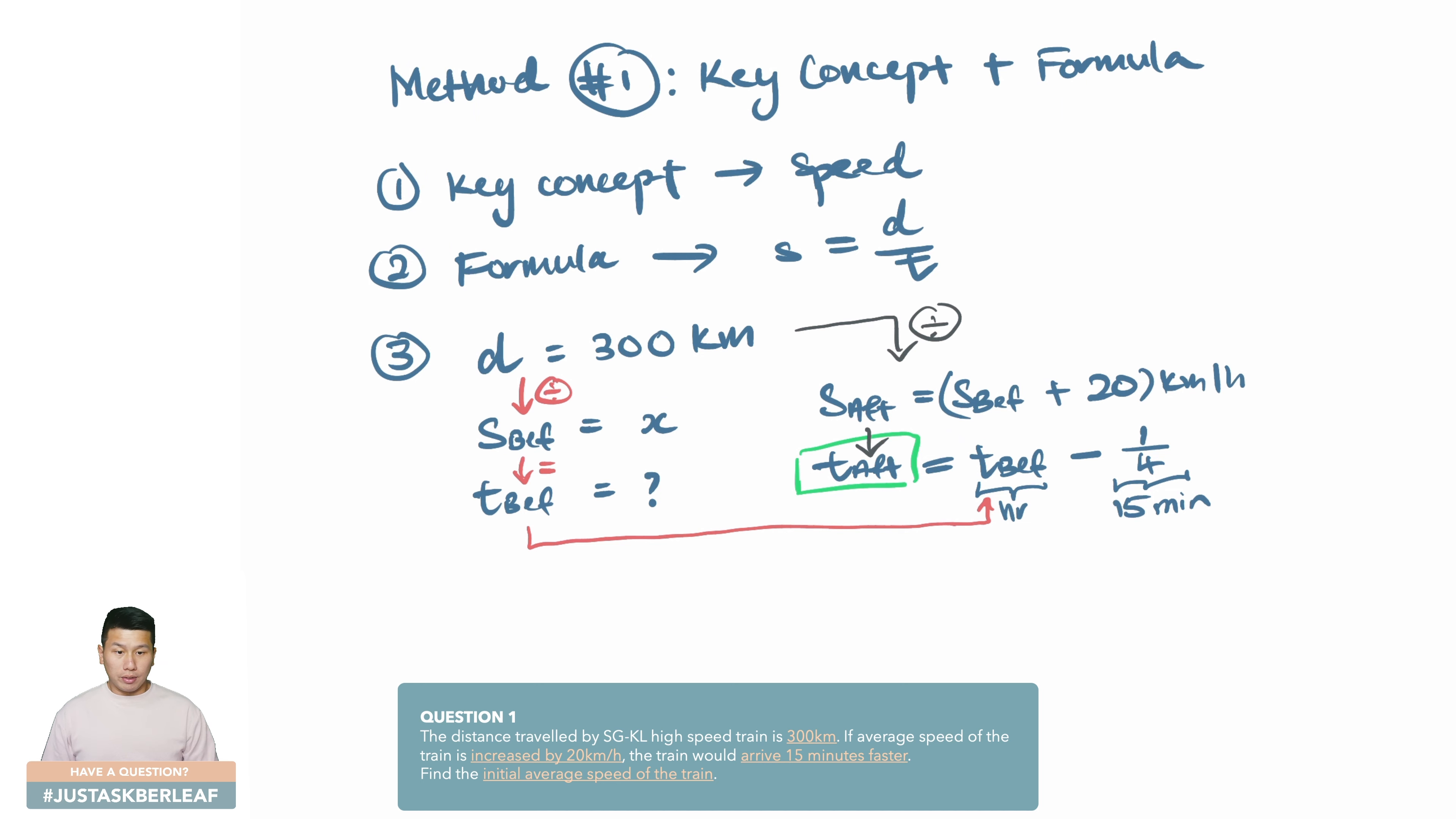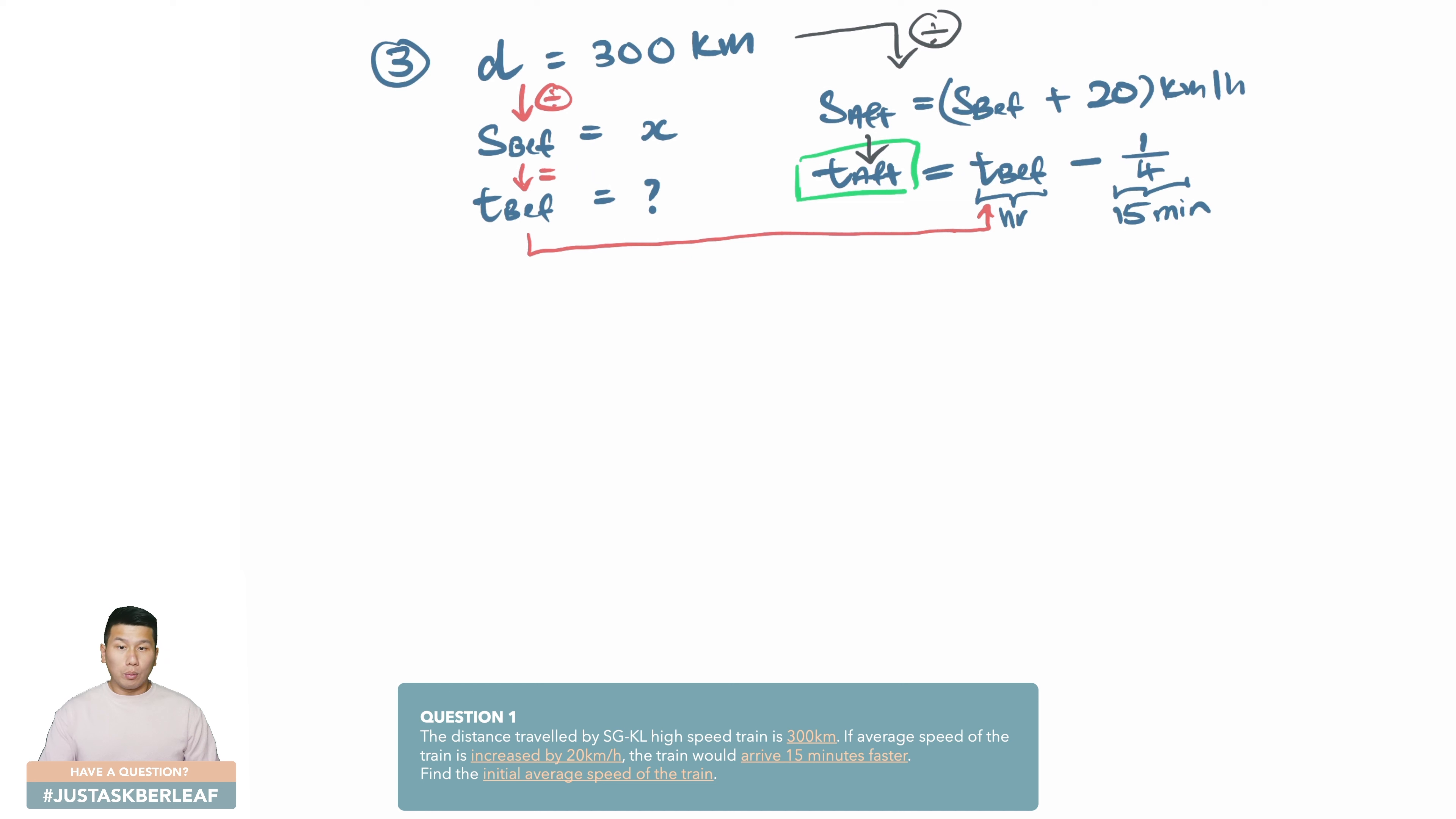Great, so we have both the time after and time before in this manner, and that actually links up everything. With that, we are able to then put together our entire equation. Let's make some space for us to work into the details. We will start off with always denoting our unknown. Let x km per hour be the initial speed of the train.